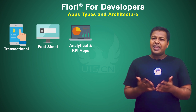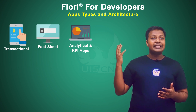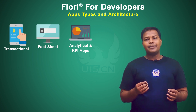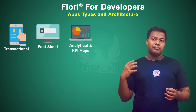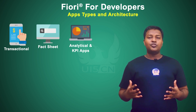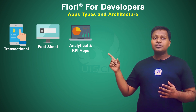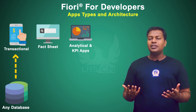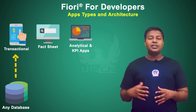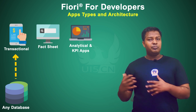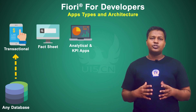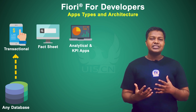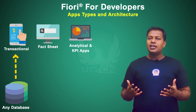As you may have seen, the analytical and fact sheet applications require a huge amount of data to be processed in a very short amount of time, so you need a backend database that supports that. For the first type — transaction applications — you can use any database: it can be your HANA database, DB2, MongoDB, PostgreSQL, or any NoSQL database. Any database where your ERP data is stored can be used to run your transaction application.